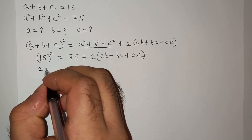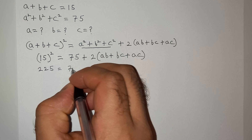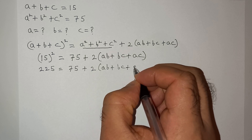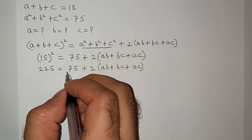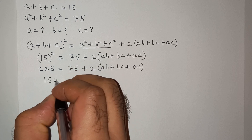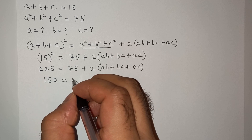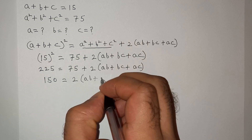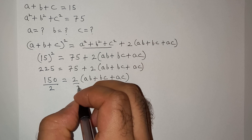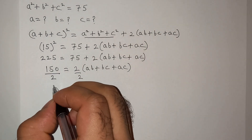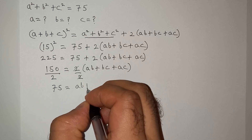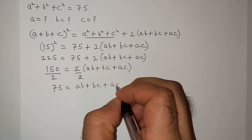Now, a plus b plus c is given as 15, so we write 15 squared, which is 225, equals 75 plus 2 times bracket ab plus bc plus ac. So 225 minus 75 gives 150, equals 2 times ab plus bc plus ac. Dividing both sides by 2, we get ab plus bc plus ac equals 75.